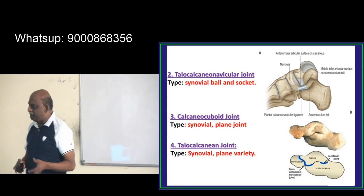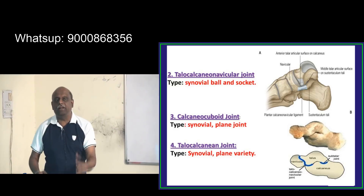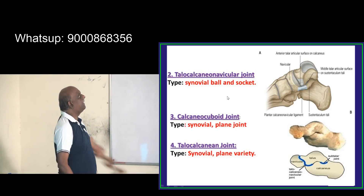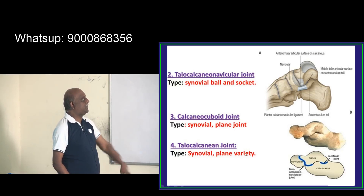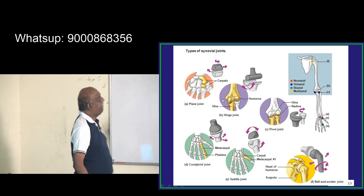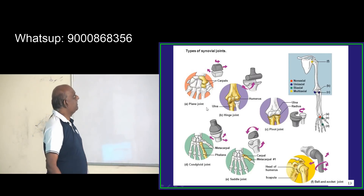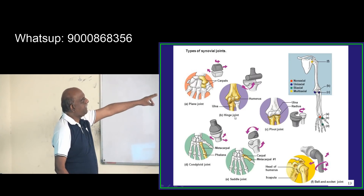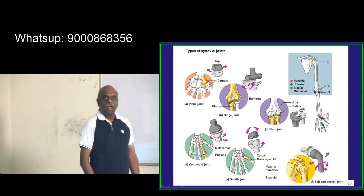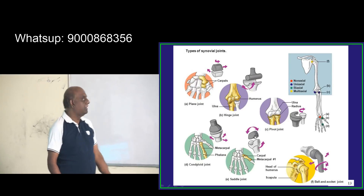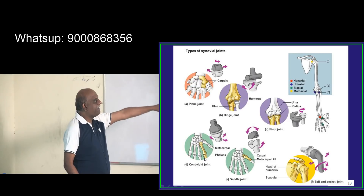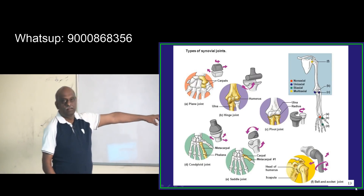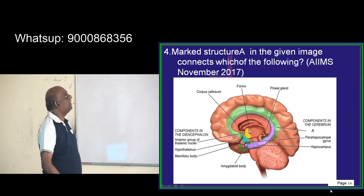To recap: the talocalcaneo-navicular joint is a synovial ball and socket type of joint. The calcaneo-cuboid is a synovial plane joint. The best example of a plane joint is between the carpals. The hinge joint is at the elbow. The radio-ulnar is a pivot joint. Between the metacarpal and phalanx you have a condyloid joint. The carpometacarpal is a saddle joint. The shoulder is a ball and socket joint.